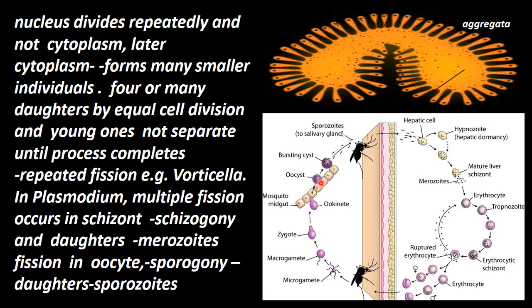Oocysts are formed in the mosquito's mid-gut intestine layer. This oocyst ruptures and produces sporocytes again. This process is called sporogony. Fission in the oocyst is called sporogony, and the daughter cells produced are called sporocytes.